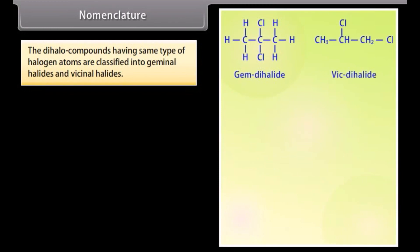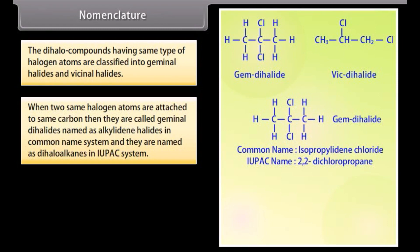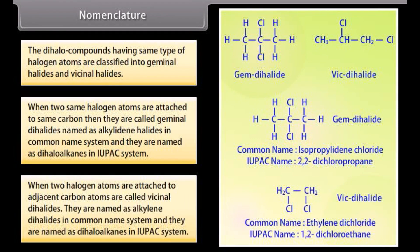The dihalogen compounds having the same type of halogen atoms are classified into geminal halides and vicinal halides. When two same halogen atoms are attached to the same carbon, they are called geminal dihalides — named as alkylidene halides in the common name system and as dihaloalkanes in IUPAC. When two halogen atoms are attached to adjacent carbon atoms, they are called vicinal dihalides — named as alkylidene dihalides in common name and as dihaloalkanes in IUPAC.